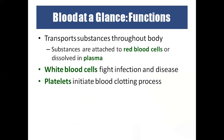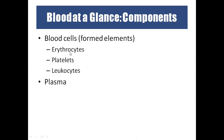Blood consists of two parts: a cellular part and a liquid part. In the cellular part we have three types of cells: RBC, WBC, and platelets. RBC are erythrocytes — red in color. WBC are leukocytes — white blood cells. Erythrocytes carry oxygen in the blood because of the hemoglobin present in them. Platelets are for blood clotting.